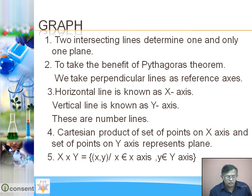For convenience, the horizontal line is known as the x-axis and the vertical line is known as the y-axis. These are actually number lines. A number line has a one-to-one correspondence between a point and a real number. This is the principle of number line.